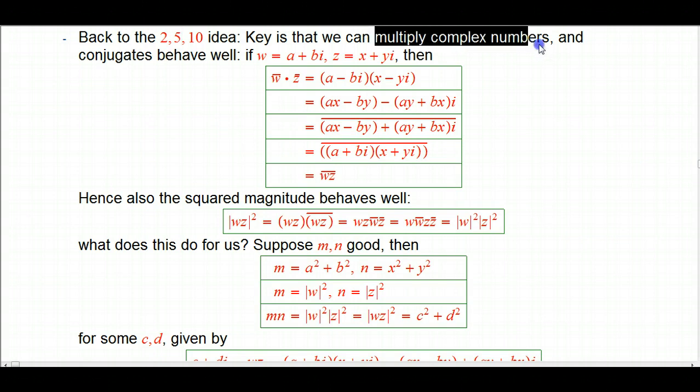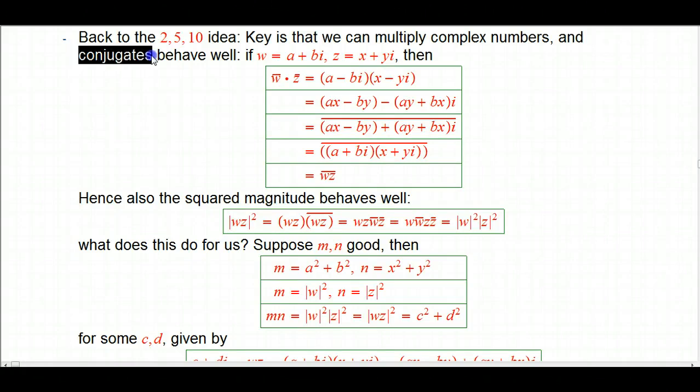Let's do a little algebra with complex numbers to show that. The key is that we can multiply complex numbers. When you represent 2 or 5 or 10 as the sum of 2 squares, you're really using a single object, the complex number. And you can combine those pairs in a very interesting way by multiplying complex numbers.